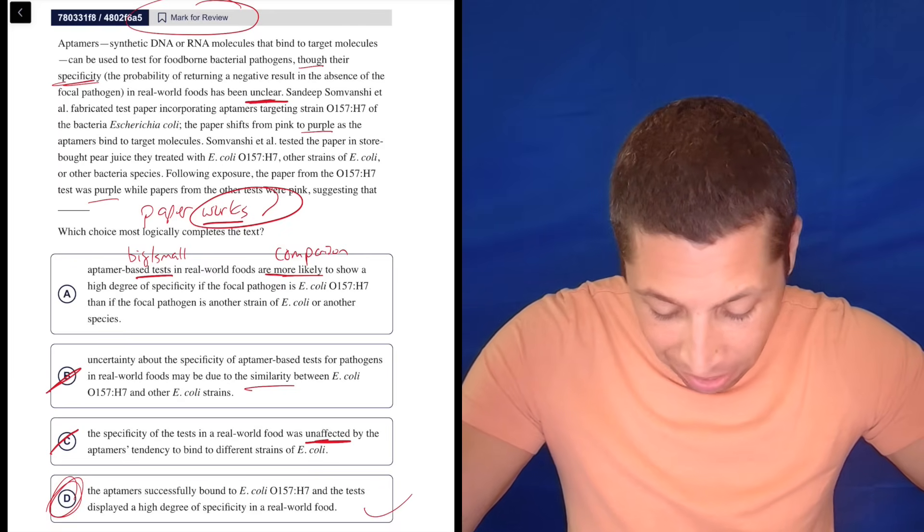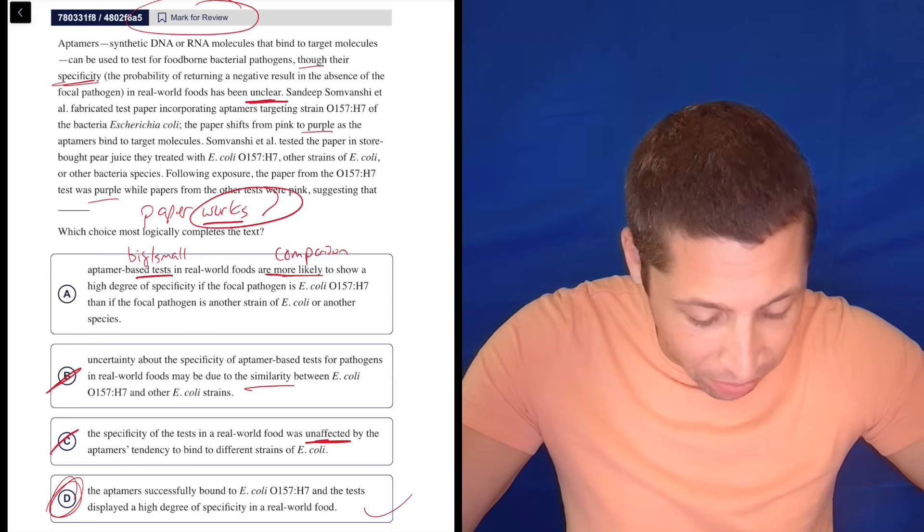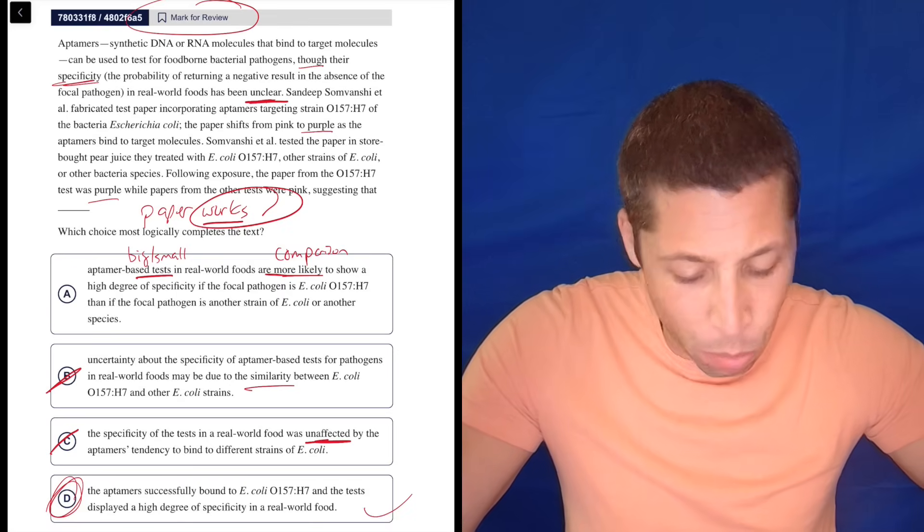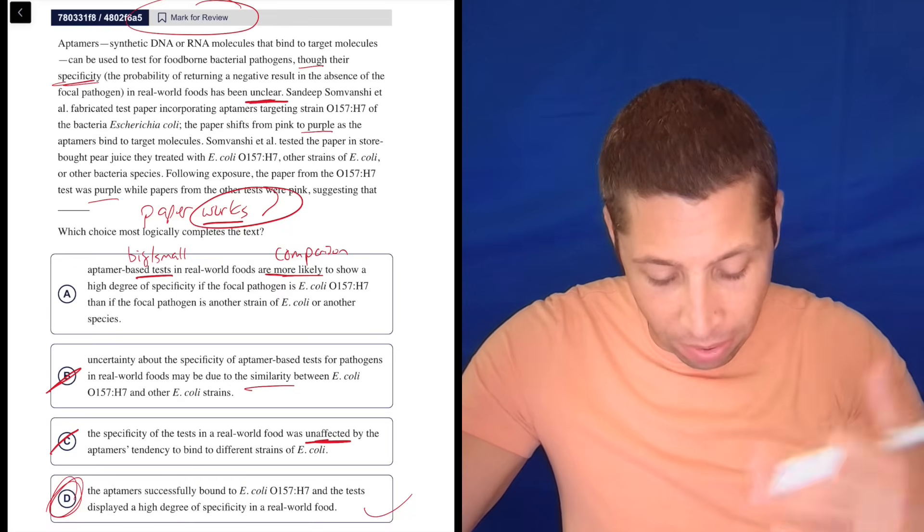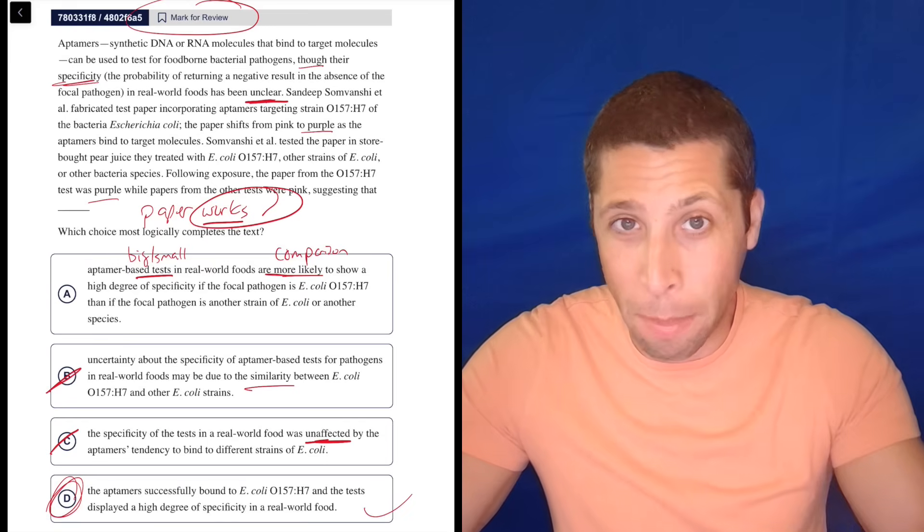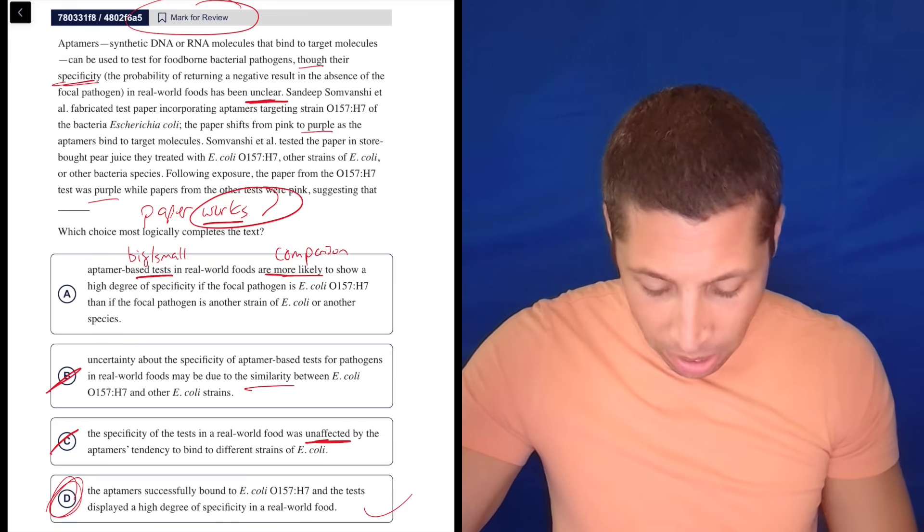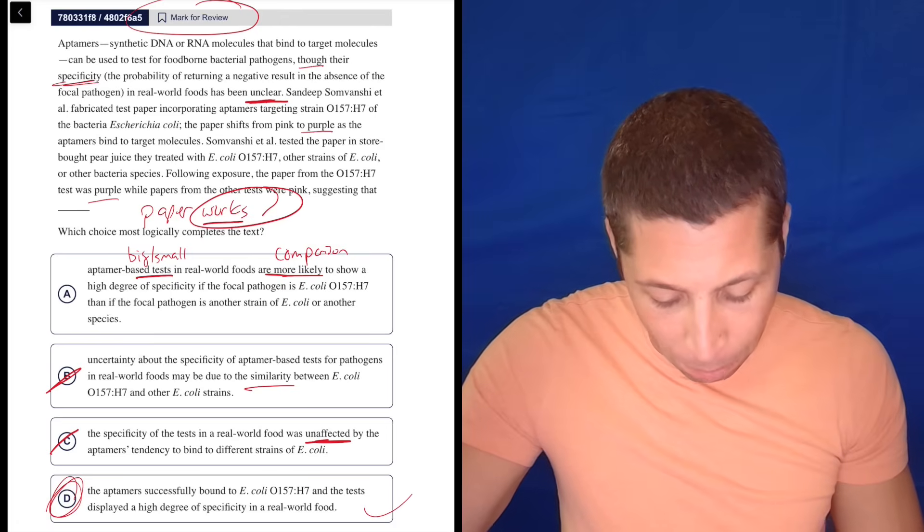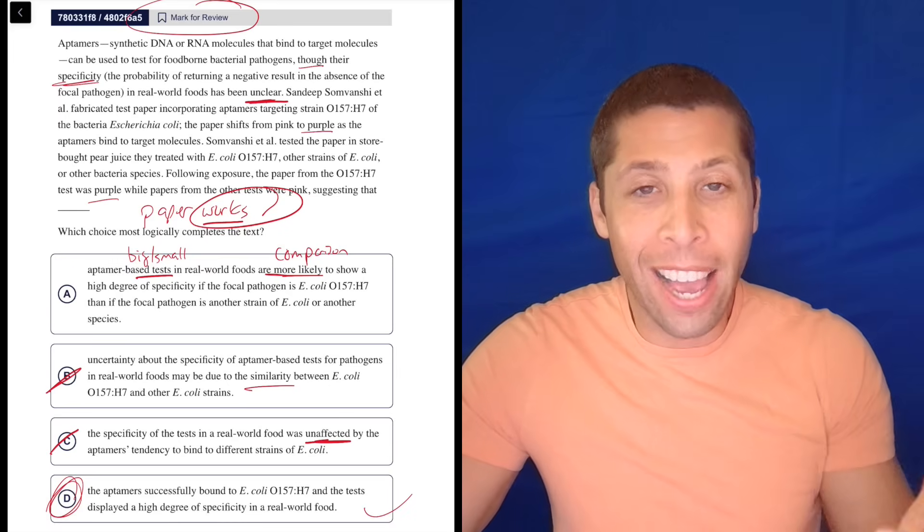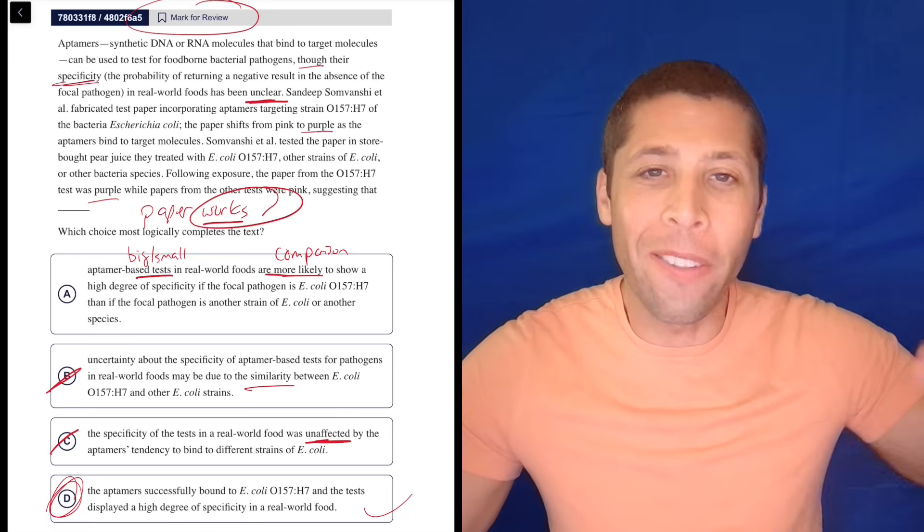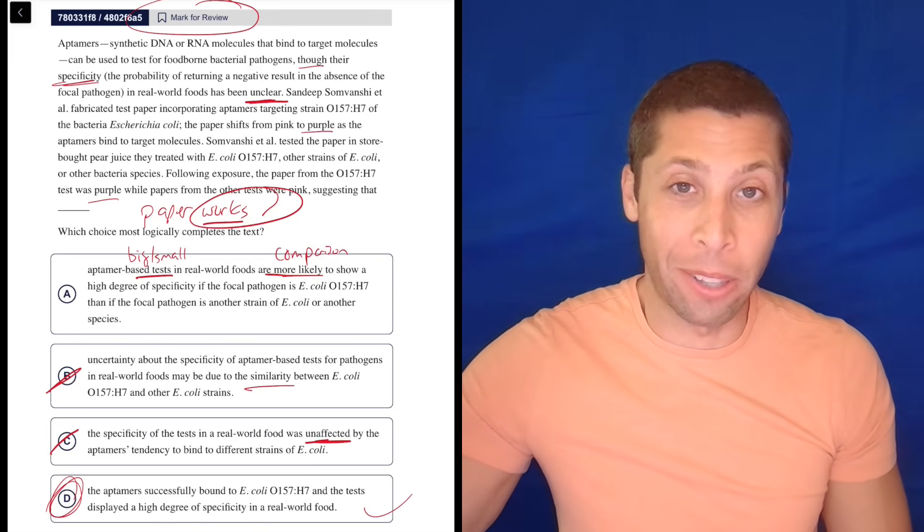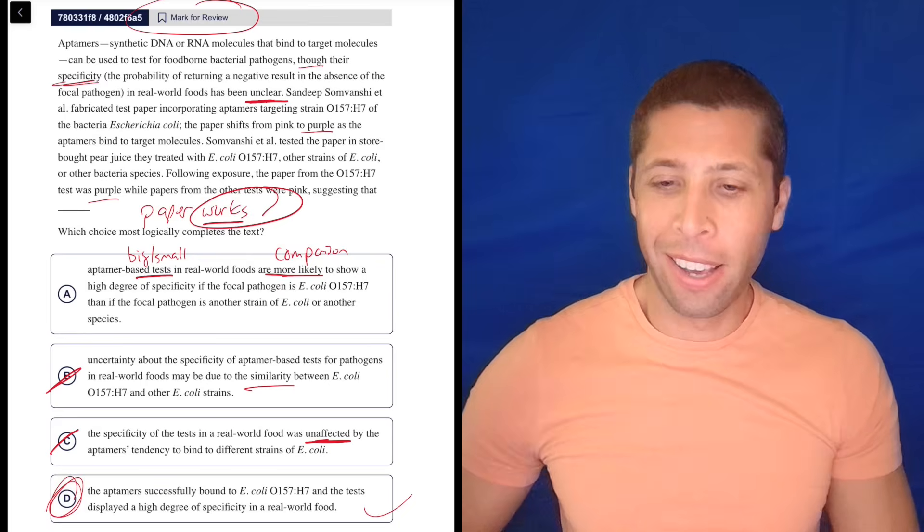Yeah, we're not comparing. This is definitely wrong. B again, uncertainty about the specificity of aptamer-based tests for pathogens in real world foods maybe due to the similarity. No, I don't know what's going on in general. I only know what's going on in this one case. And they specifically are saying that O157 is not similar to these other things, at least when they're testing this one type of paper, it was different. So no, and C, the specificity of the tests in the real world are unaffected by the aptamers tendency to bind to different strains. No, it is affected. Again, it bound to the right thing, right? The one that they were testing for tested positive. The others didn't.